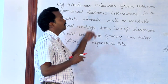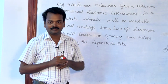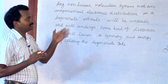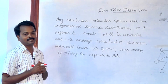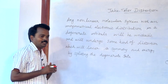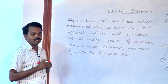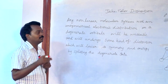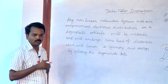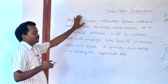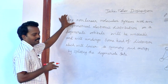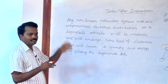Today my topic is Jahn-Teller Distortion. The scientists Jahn and Teller discovered that this distortion is exhibited in the D9 system, specifically the copper 2+ system. What they stated is called the Jahn-Teller theorem.